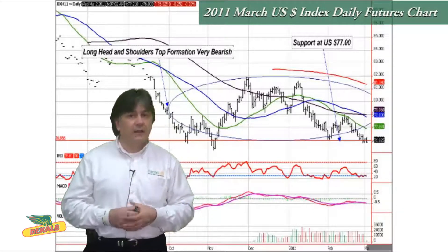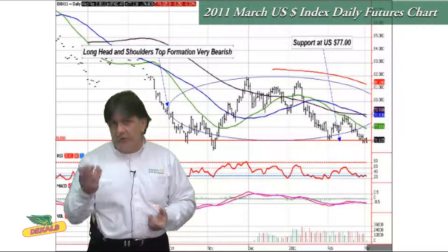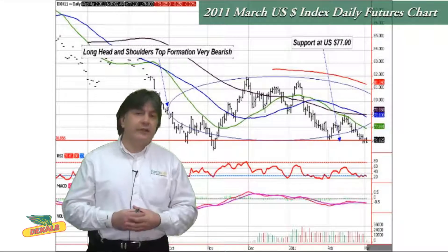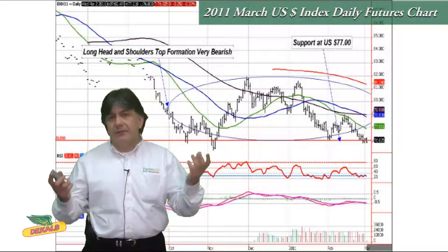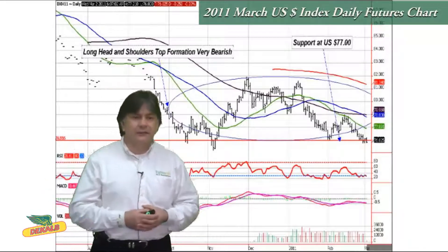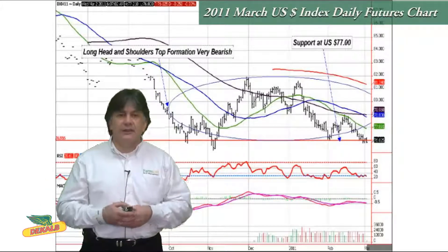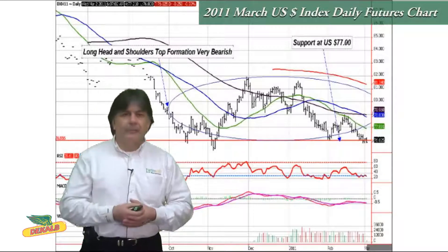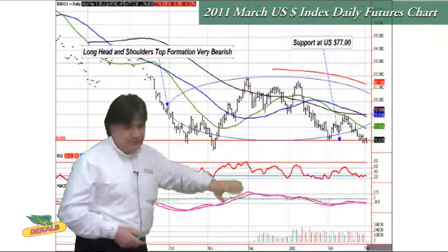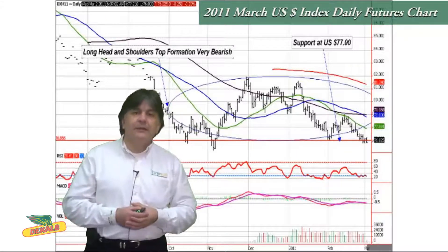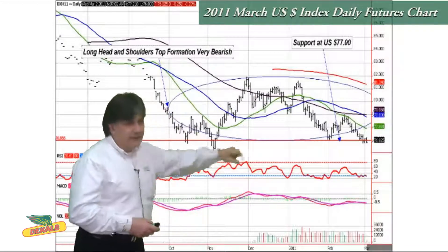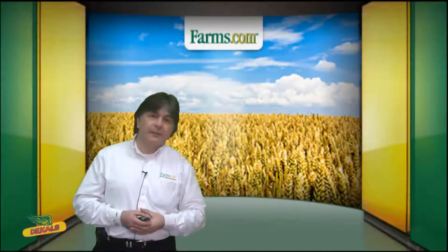This US dollar is really being affected by a lot of factors. The Euro dollar is one of them, but that high debt-to-GDP ratio in the United States at 75% of GDP is an overhanging factor causing this weakness in the US dollar. You can see from this chart there's a pattern showing a top head-and-shoulders formation — you get the left shoulder, the head, and then the right shoulder — and that's very, very bearish going forward.